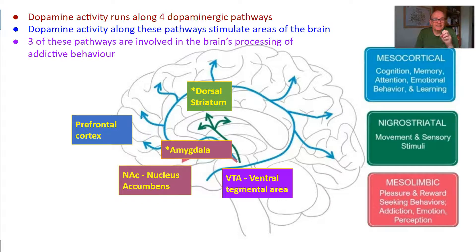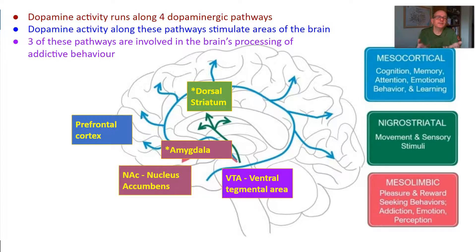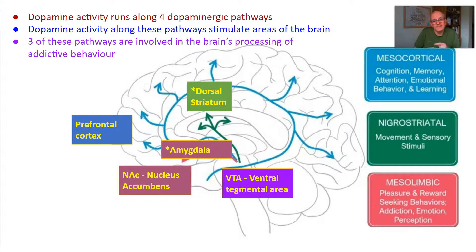Another part is the nigrostriatal pathway, which goes to what's called the striatum part of the brain. There's a part there called the dorsal striatum, and dopamine activity to the dorsal striatum creates habits. For example, students who leave college and straight away light a cigarette do it every single time — it's almost an automatic habit. That's because when they've been smoking, they've been sending dopamine activity down their nigrostriatal pathway and exciting the dorsal striatum, creating this habit that they then repeat.